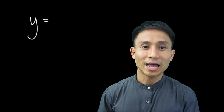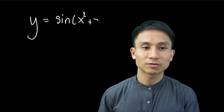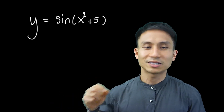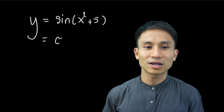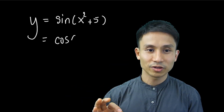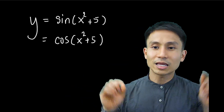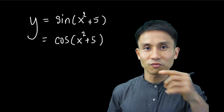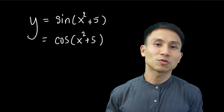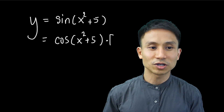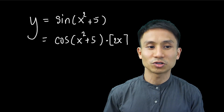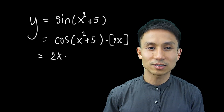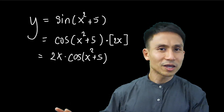Let's try another one: sine of (x²+5). Here, x²+5 must be done first, so the outermost function is sine. Differentiating sine gives cosine, and we keep the inner part the same, writing cos(x²+5). Then going one layer inside, we differentiate x²+5 to get 2x, and multiply that outside everything. Simplified, the result is 2x·cos(x²+5).